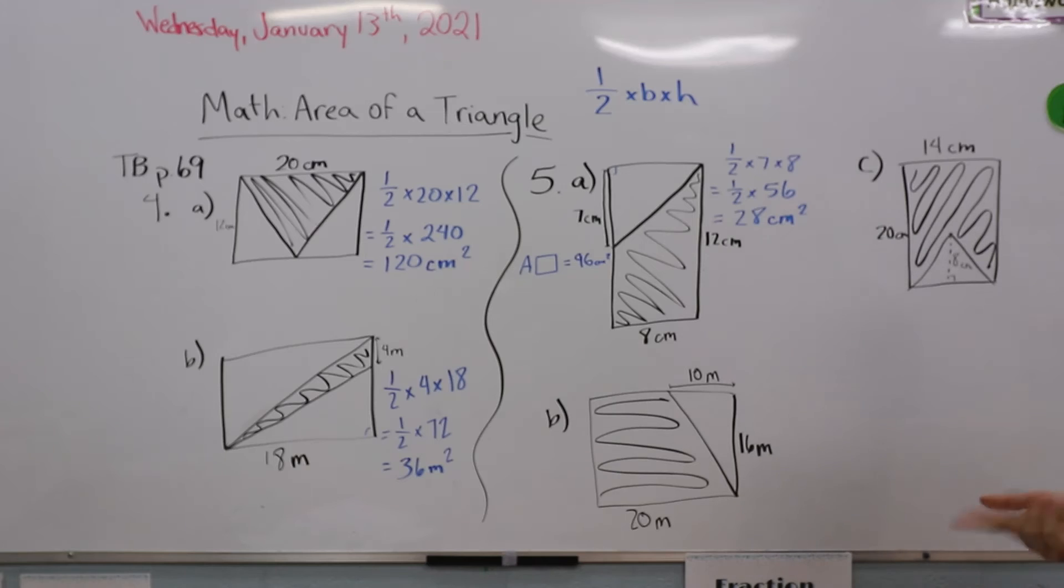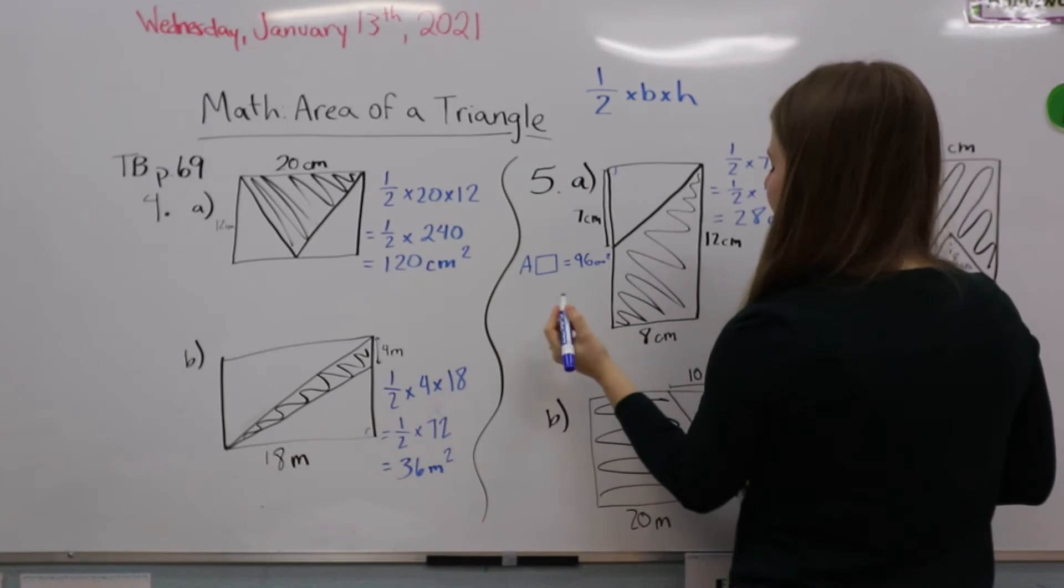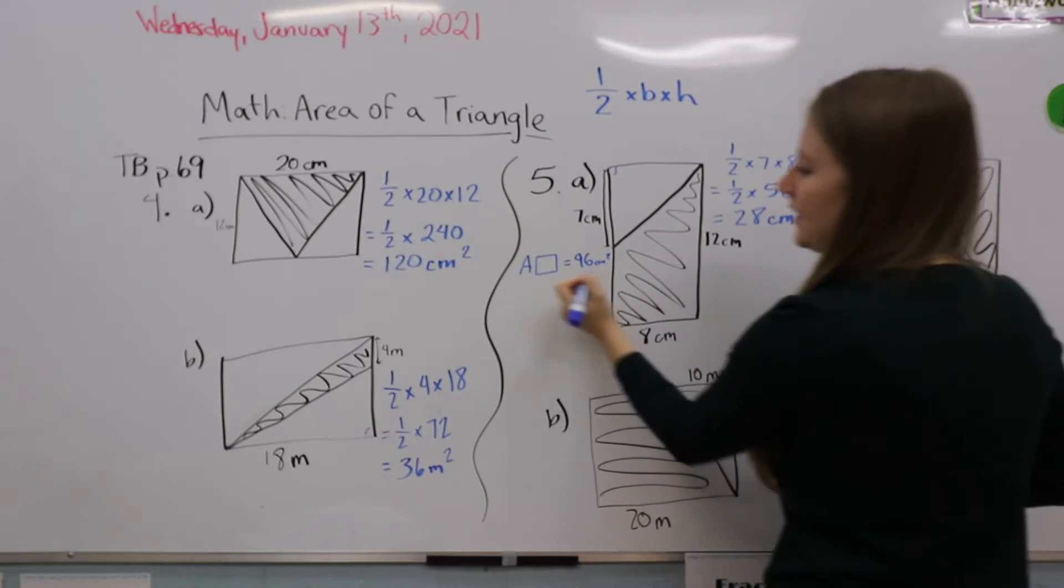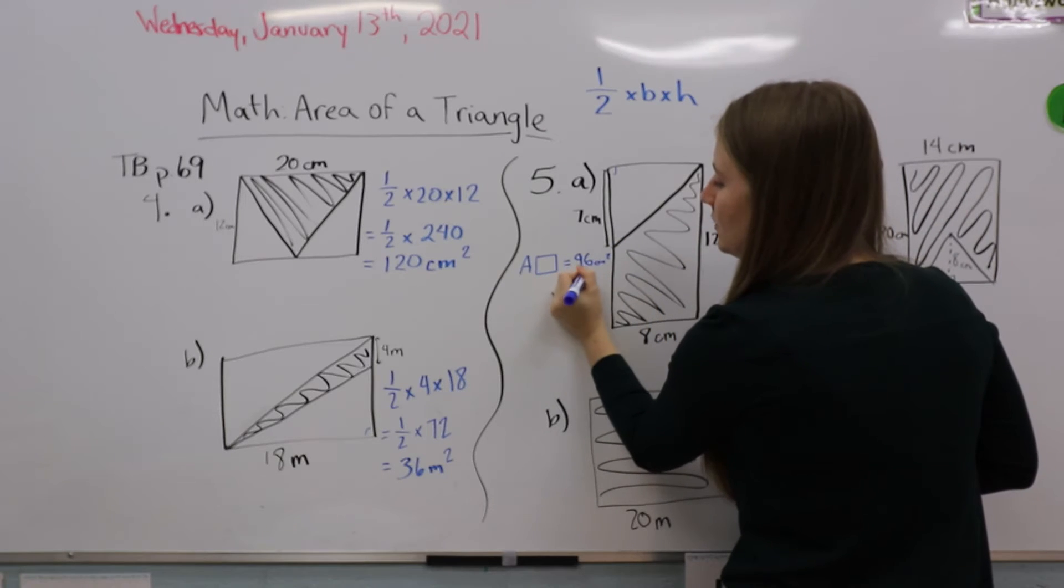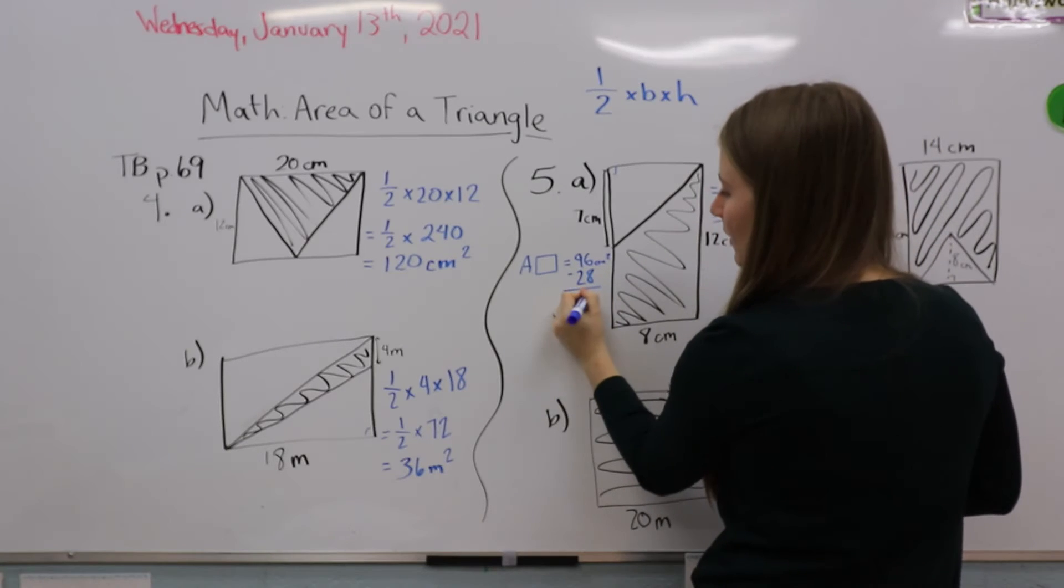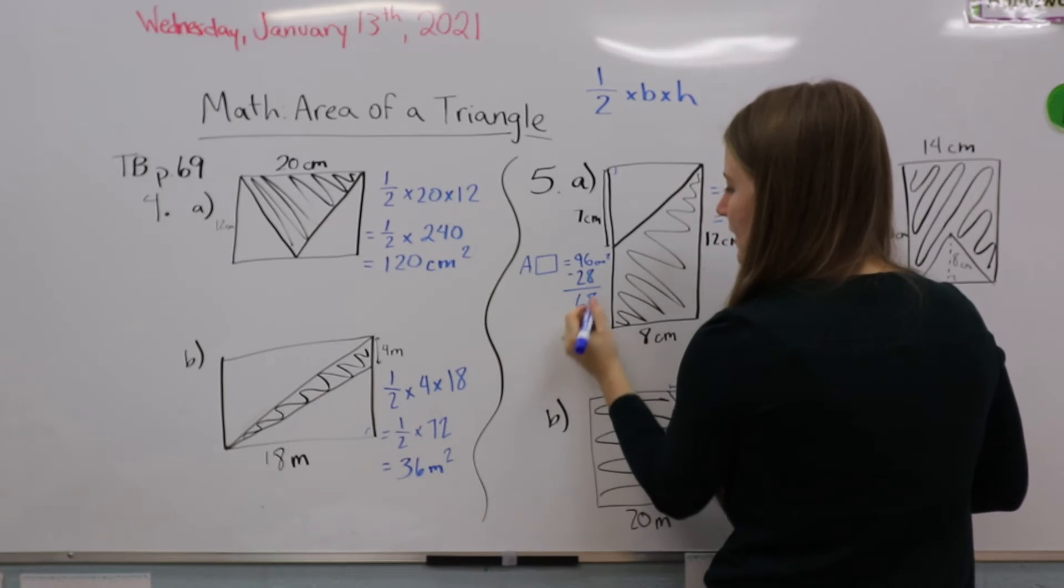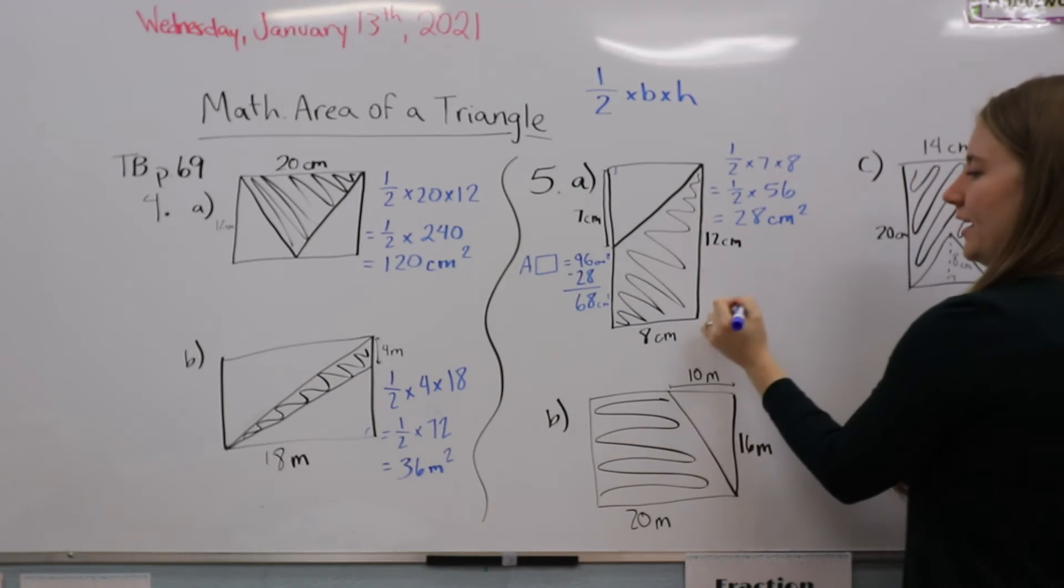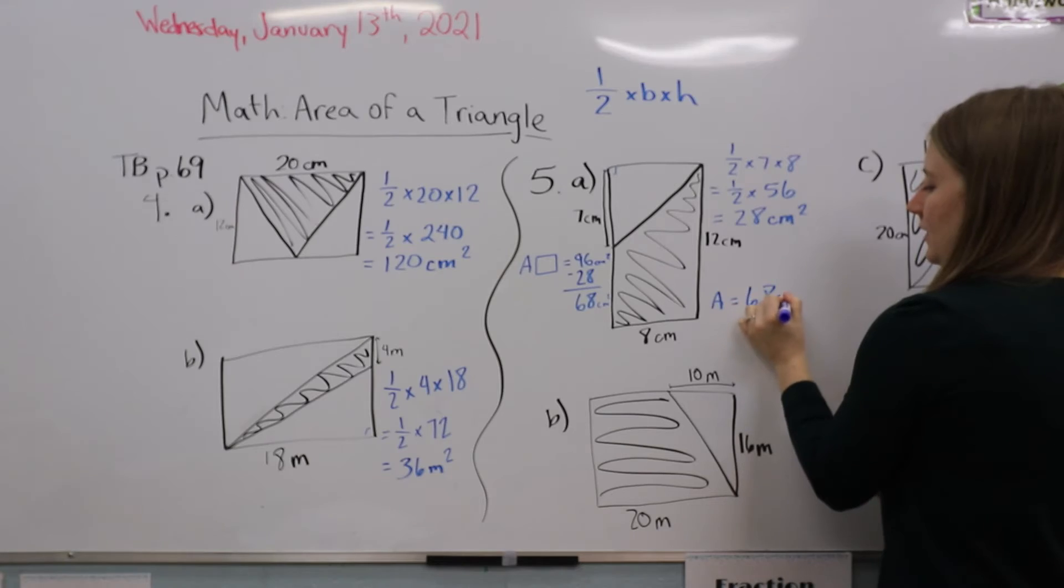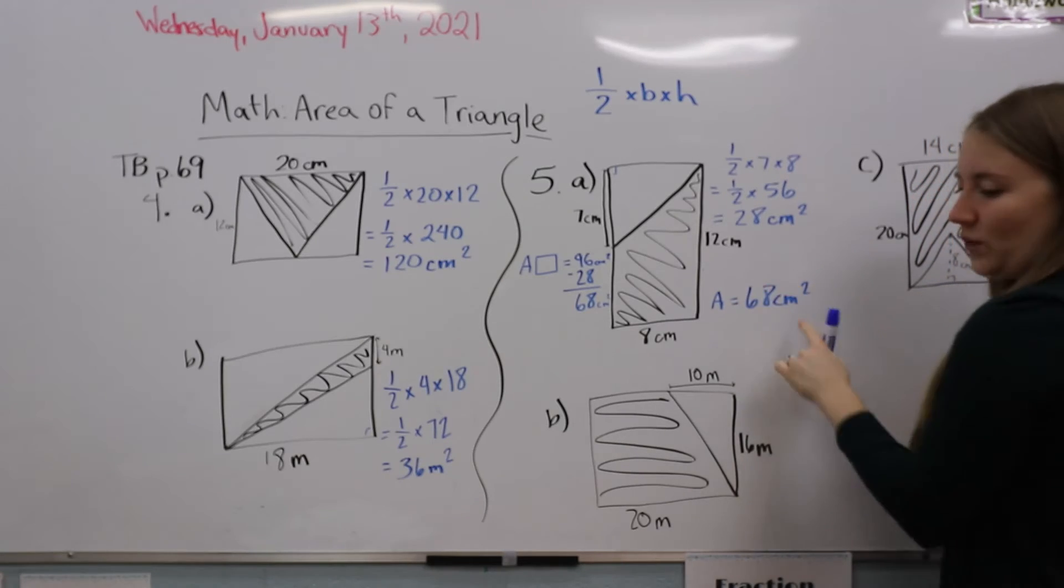Now we're going to sort ourselves out. We're going to take this area and subtract this area off of it. So 96 minus 28 is 68. So the shaded area is 68 centimeters squared.